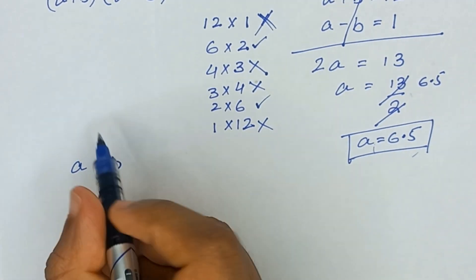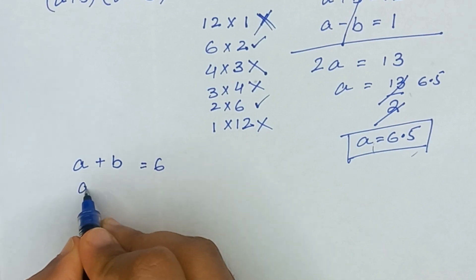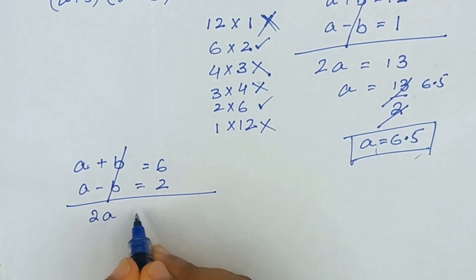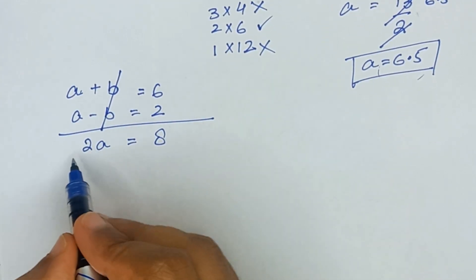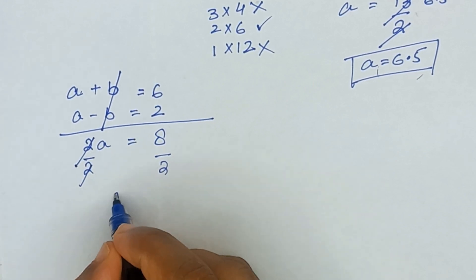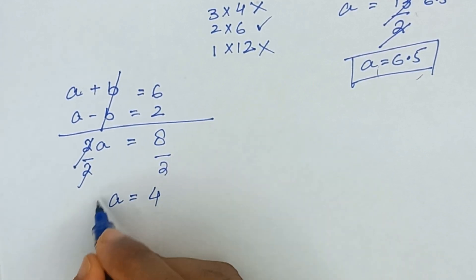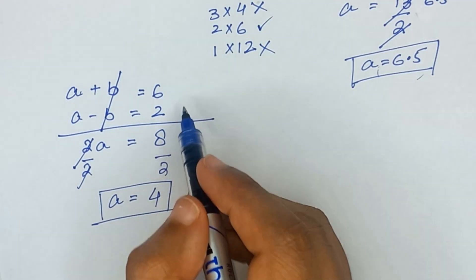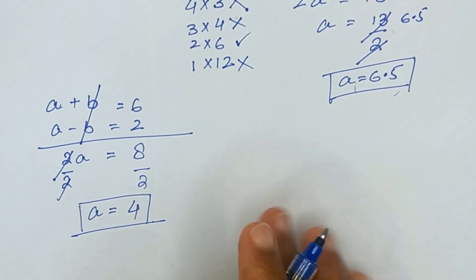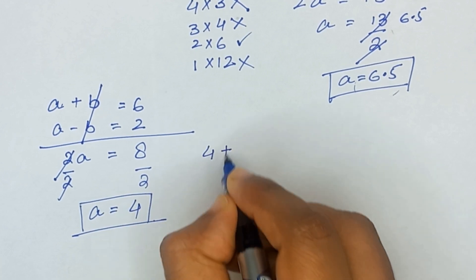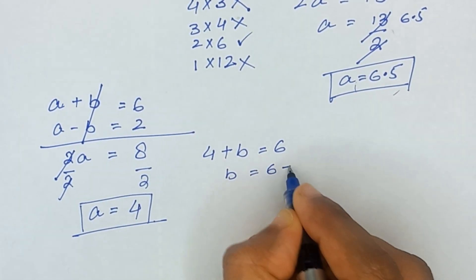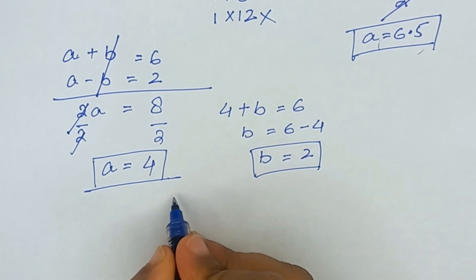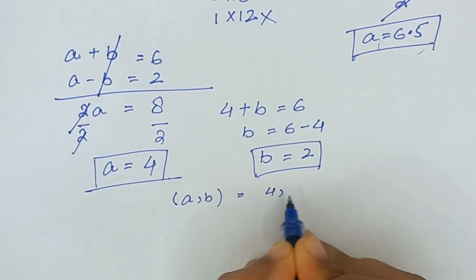First, I take a plus b equal to 6 and a minus b equal to 2. Adding these two equations, the b terms cancel and we get 2a equal to 8. Dividing both sides by 2, a equals 4, which is an integer. Substituting a equals 4 into a plus b equals 6 gives b equal to 6 minus 4, so b equals 2. Therefore a equals 4 and b equals 2.